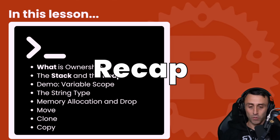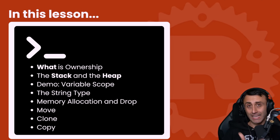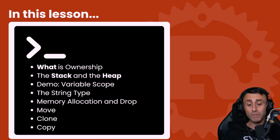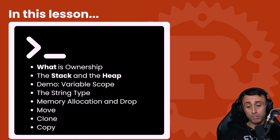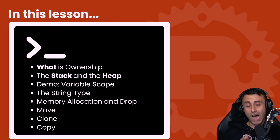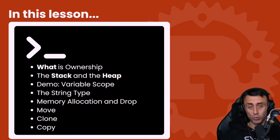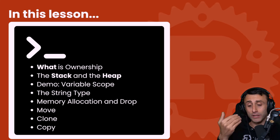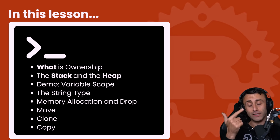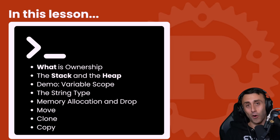In this lesson we saw what ownership is, the difference between the stack and the heap as applied to Rust, a quick demo about variable scope, the String type with capital S, how to allocate memory, the drop trait for types on the heap, and then the move trait, the clone trait, and the copy trait. Well done!